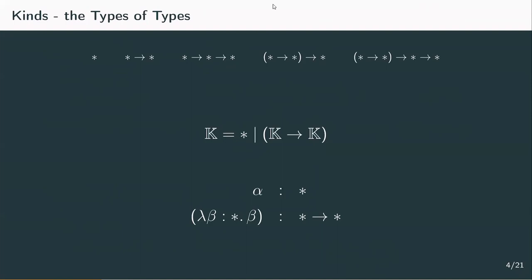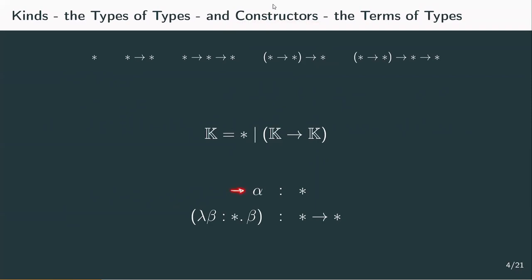Type abstractions look like lambda terms, but they're missing the essential property of being terms that can be beta reduced to a new term — they construct a type. So we're going to fittingly call them type constructors, or constructors for short. Even types which have kind star and don't contain any abstractions are called constructors. So alpha on its own is a constructor and so is lambda beta dot beta.